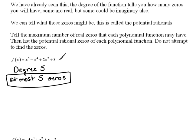After working many, many, many problems, they figured out a little bit of a shortcut. And this is called the potential rationals.